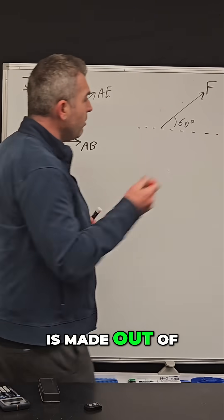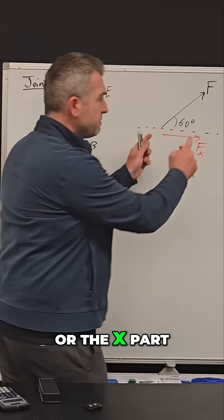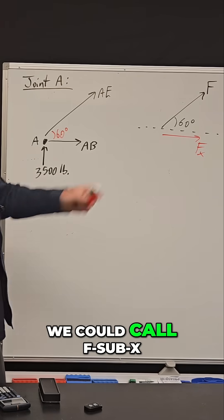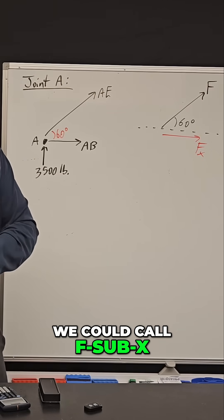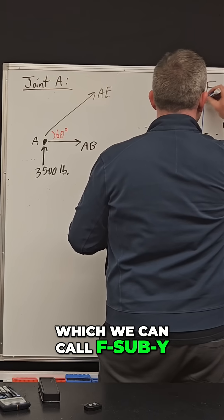So a diagonal force is made out of an X component or the X part of this force, which we could call F sub X, and a Y component, which we can call F sub Y.